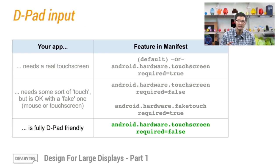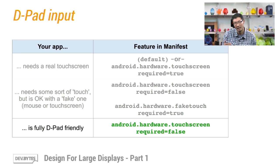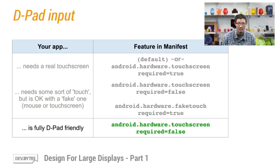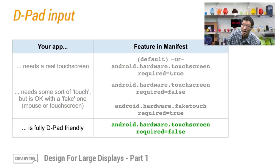To illustrate the relationships between these three input methods, we've added a D-pad entry in this table. If your app is fully D-pad friendly — meaning you can completely navigate throughout your app using just the conventional D-pad without any gesture control — then you can simply declare no-touch or touch equals false in your Android manifest, and you may not need to consider fake touch. But going back to the previous example, Angry Birds, that app is actually a good candidate for using this new fake touch definition.